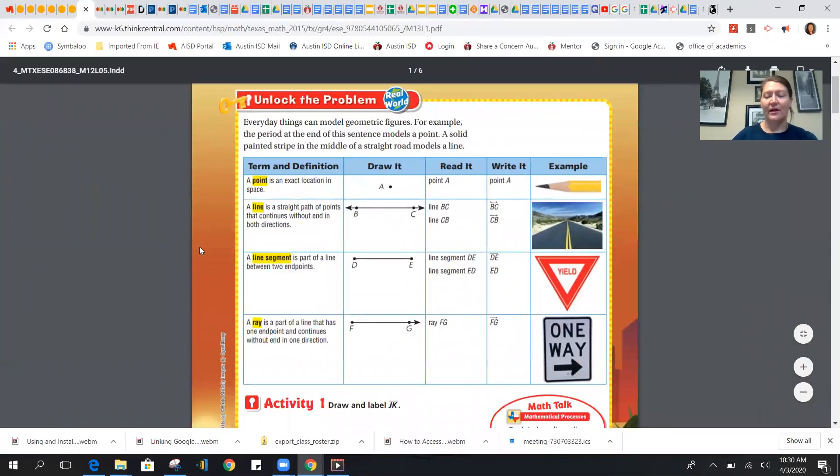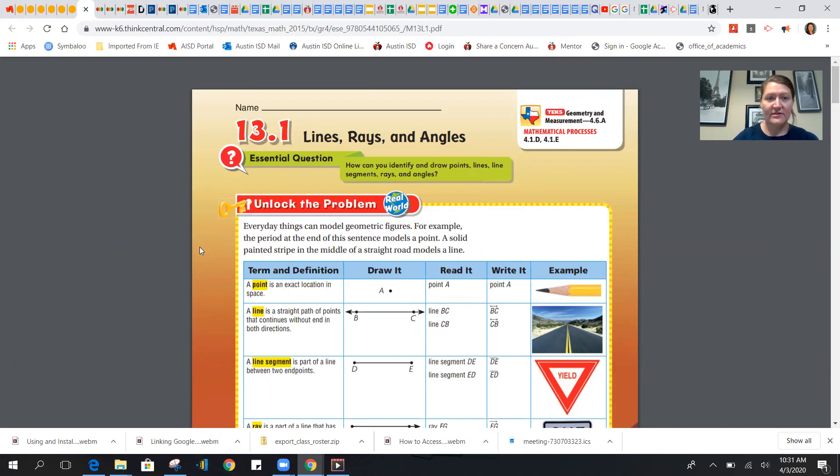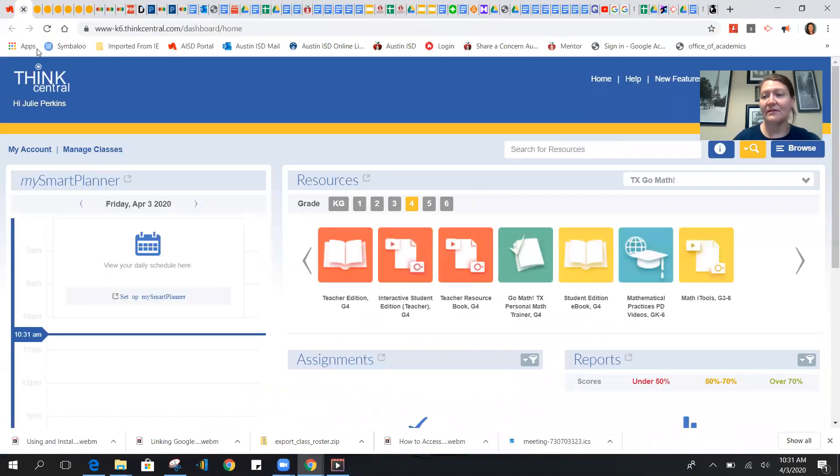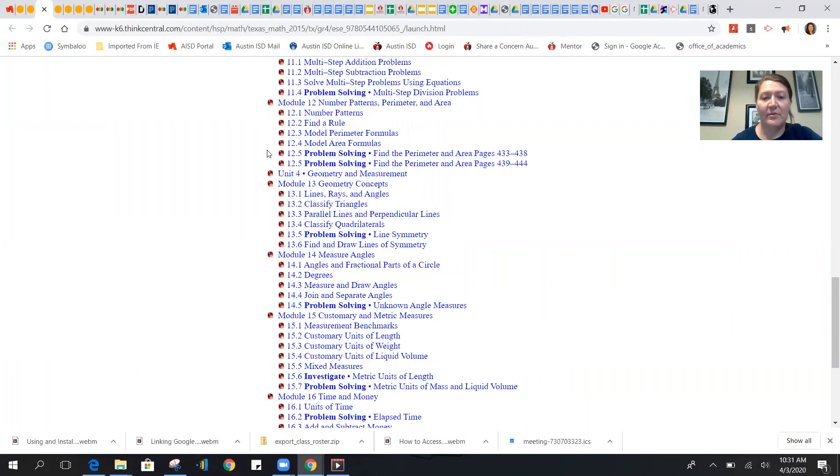Alright, so I have the book pages pulled up and you might be wondering how to get to these pages. You can just go to your portal and click on Think Central. Once you get to Think Central, you'll get to something that looks similar to this. You would click on the student edition ebook, and it gives you an option. You usually pick PDF. And then from here, you have your table of contents of the different parts of the book. So I went to module 13, and we're going to start with lines, rays, and angles, and then we're going to go through some of our other vocabulary.